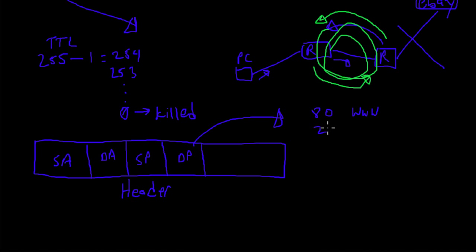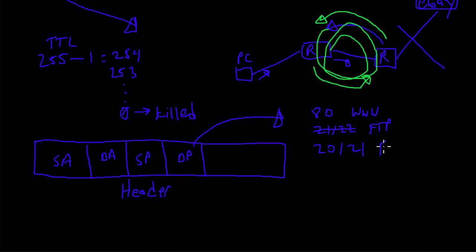Port 80 is for World Wide Web HTTP. Ports 20 and 21 are for FTP. Port 22 is for SSH. There's a whole bunch of different numbers that have been agreed upon by international standards to stand for certain applications.